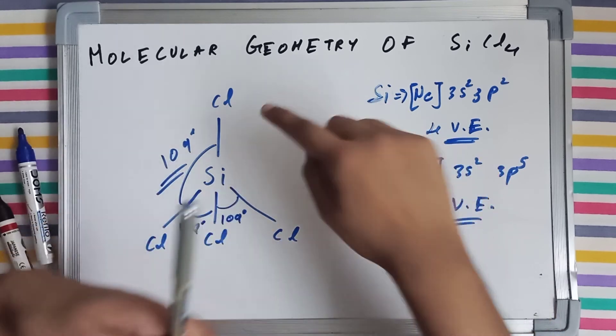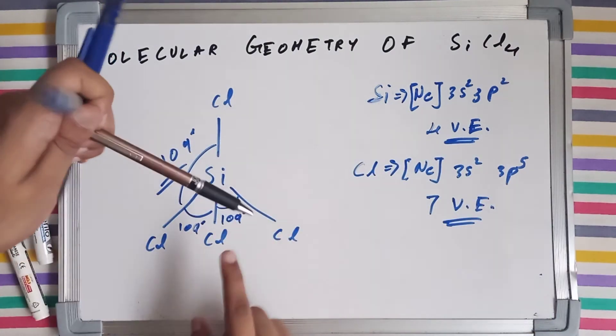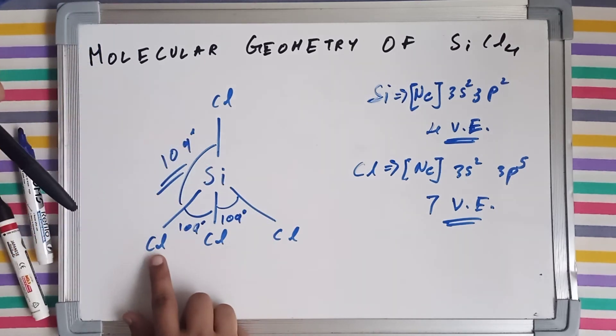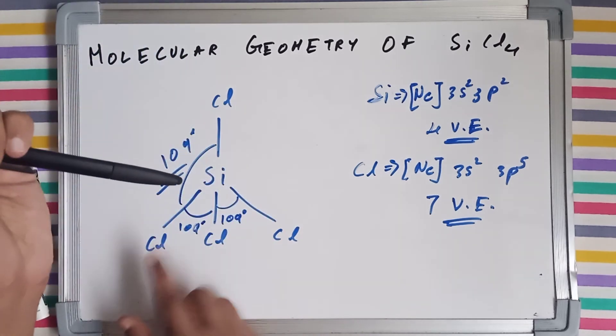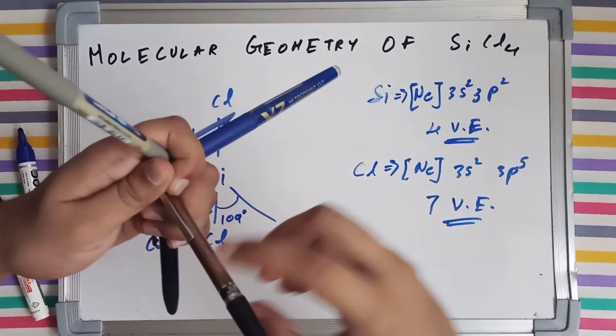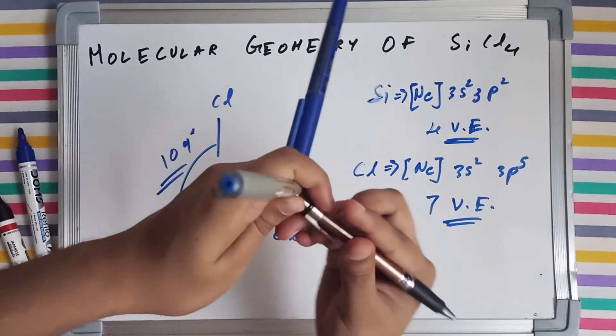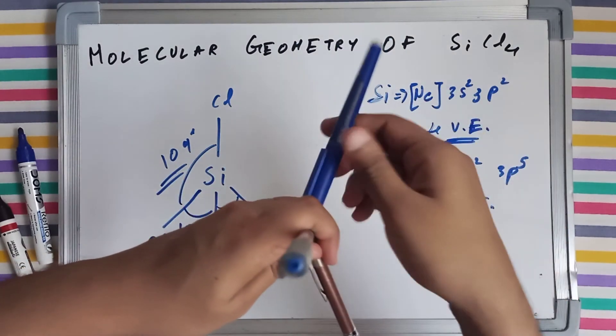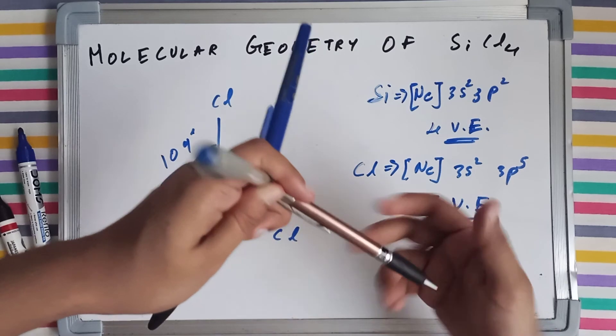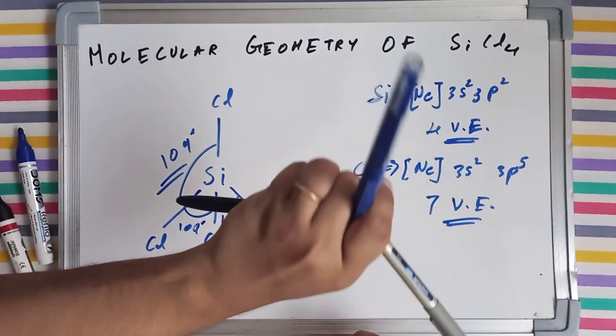On the tip of this pen, we have got this chlorine. On the tip of this pen, we have got this chlorine. On the tip of this pen, we have got this chlorine. And on the tip of this pen, we have got chlorine. So they are equally, equally angled. And the standard angles for a tetrahedral geometry molecule is 109 degrees.